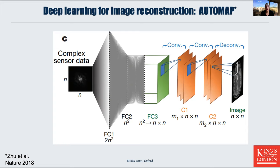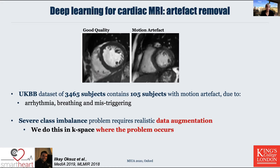But we are actually interested in fully sampled but corrupted data. By adopting this method, we looked at good quality and motion artifact-containing images from UK Biobank. From 3,500 subjects, we found 105 subjects with a motion artifact — much lower than what you'd get in clinical practice. These motion artifacts are due to arrhythmia, breathing, and mistriggering. The motion artifact shown here shows motion blur through the cardiac phases, indicating that ECG triggering has been wrong. As we only have 105 subjects with this particular motion artifact, we have a severe class imbalance problem, which requires more realistic data augmentation. Since this artifact happens during k-space acquisition, we do this augmentation in k-space, where the problem occurs.